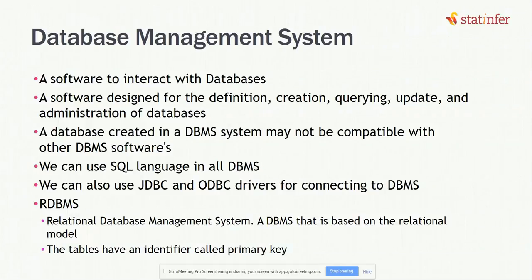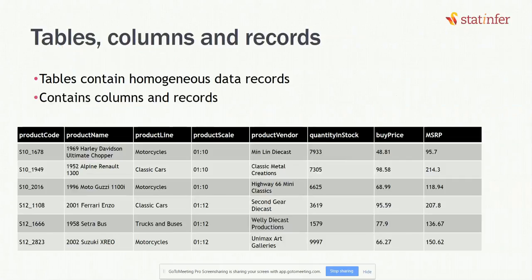In RDBMS the tables are connected. You have a product table, and somewhere you'll find the customer number of who bought a product. If you go to the orders table, you'll find the product code. For a particular order, all the product details are linked. For example, someone ordered a product called 'Harley Davidson Ultimate Chopper' — the order won't contain all product details, just who bought it, when, and the price. For exact product details you look up the product code to get the full information from the products table.